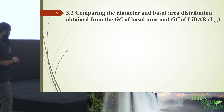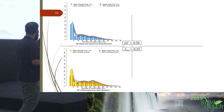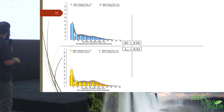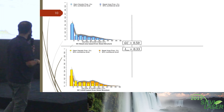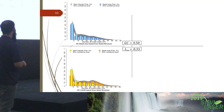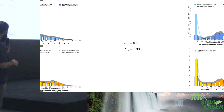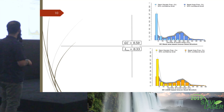We compared the basal area and diameter distribution obtained from the Gini coefficient of basal area and the Gini coefficient of LiDAR. The Gini coefficient of basal area-based even size forest structure and the LiDAR-based even size forest structure show quite similar basal area and diameter distributions. However, when calculating the Gini coefficient from basal area, maximum entropy reaches 0.5, whereas from LiDAR tree heights it reaches 0.33. Similarly, the uneven size forest structure shows almost similar basal area and diameter distributions.